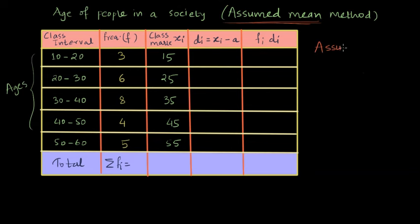Now this assumed mean, it's somewhere in the middle when we arrange the class marks in ascending order like this. So X₁, X₂, X₃ and so on. And we choose some middle value, whatever to be the class mark. So here the class marks are 15, 25, 35, 45 and 55. We can choose our assumed mean to be 35 here. So here we are assuming that our assumed mean is 35.